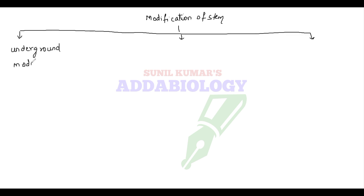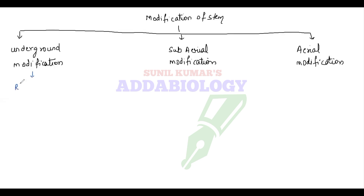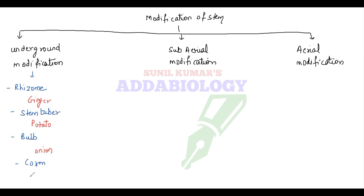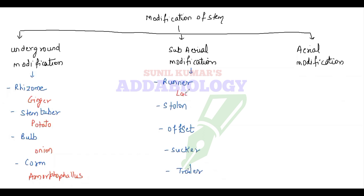There are three types of modification. First we have underground modification, then sub-aerial modification, then aerial modification. Underground modification means modification taking place below the soil. It includes rhizome, stem tuber, bulb, and corm. Examples: rhizome — ginger; stem tuber — potato; bulb — onion; corm — Amorphophallus.